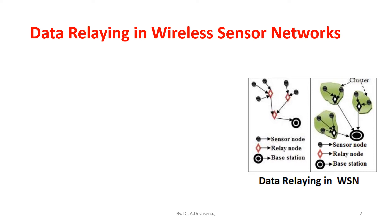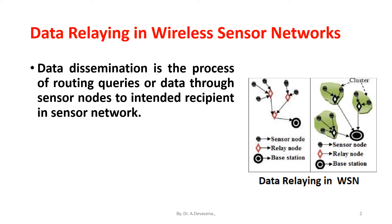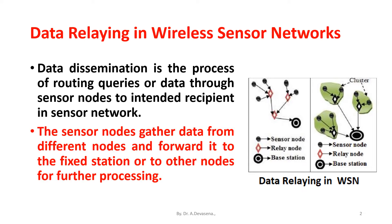Data dissemination is the process of routing queries or data through sensor nodes to the intended recipient in a sensor network. The sensor nodes gather data from different nodes and forward it to the fixed station or to other nodes for further processing.